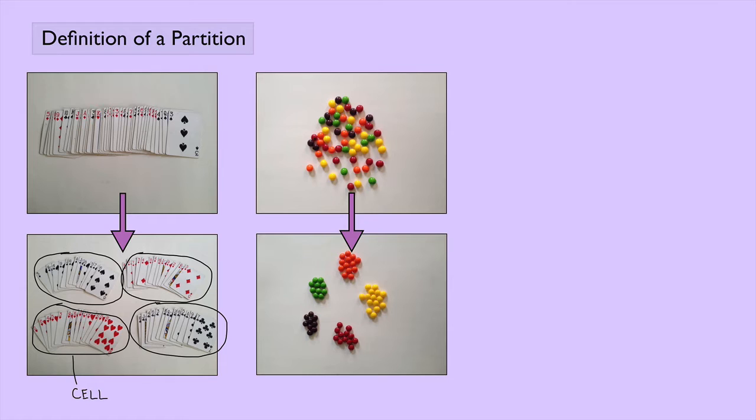So we've partitioned the set of candies here, and we would have, in this case, five different cells. Each of these is a cell.